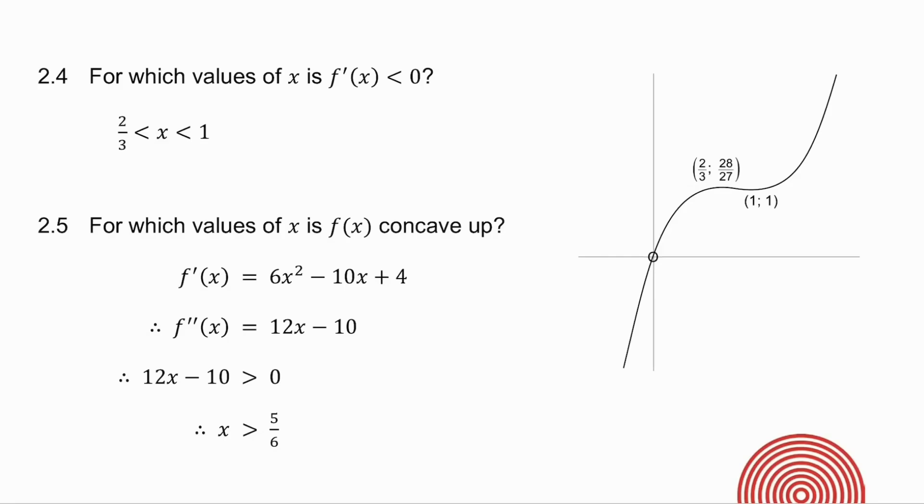2.4 asks for which values of x is the derivative negative. Now remember, if you want the derivative to be negative, you want to know where is the graph sloping down, and it's sloping down between the two turning points. In other words, when x is greater than 2 thirds, less than 1.